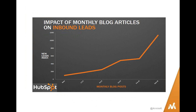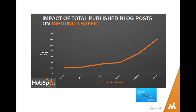Here's research from HubSpot over thousands of websites showing the impact of producing monthly articles or blog posts as it relates to leads coming into your organization. The target, if you have the resources, is to try to get to producing maybe as many as 12 to 15 new pieces of content every month. The more you can produce on a monthly basis, the more leads and traffic you're going to generate and ultimately the more business you'll generate.